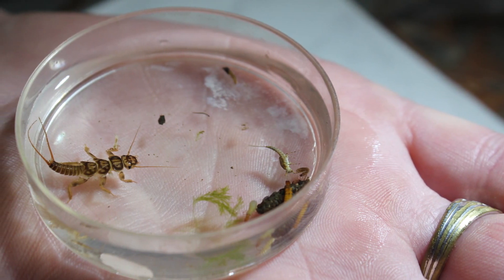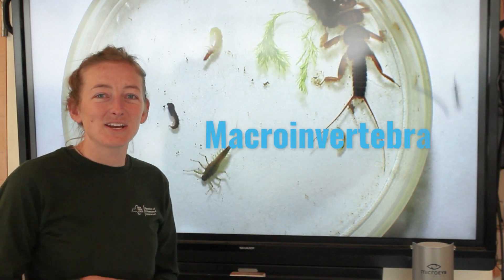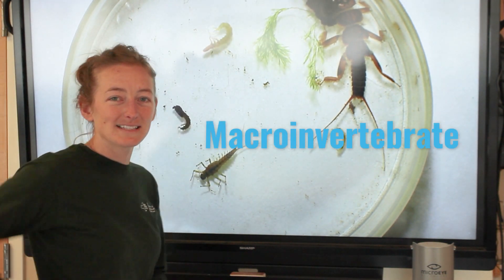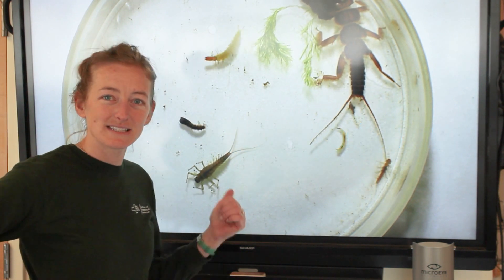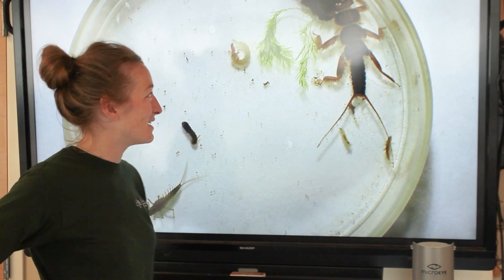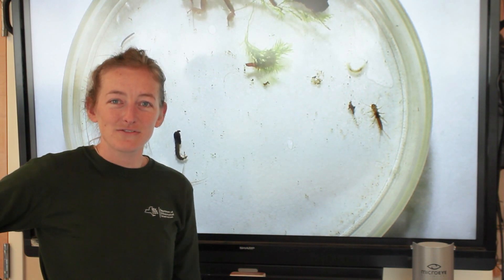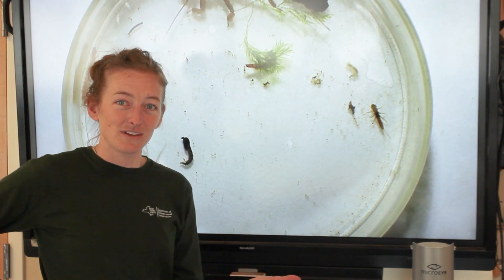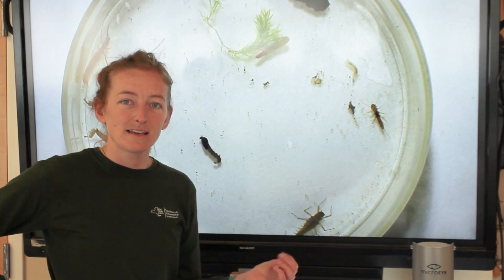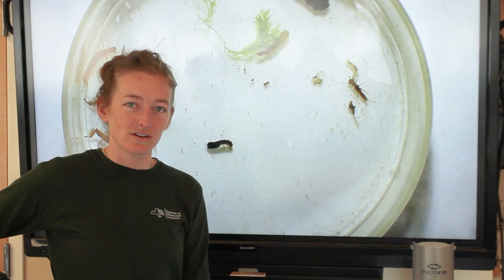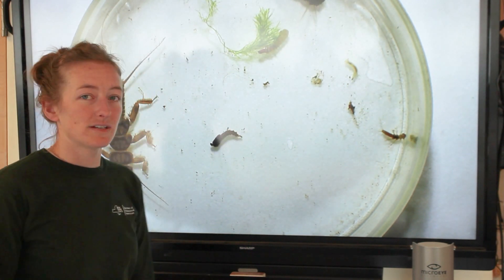A lot of different animals came out of our stream. A macroinvertebrate is an aquatic organism that has no backbone. So unlike humans or mammals that have a backbone, these tiny little insects don't have them — although they don't look so tiny in this picture! They live parts of their life in the aquatic habitat, and some of these are actually juvenile insects that will grow up to be terrestrial insects, so they'll fly away. But some of them will also live their entire life in the stream.